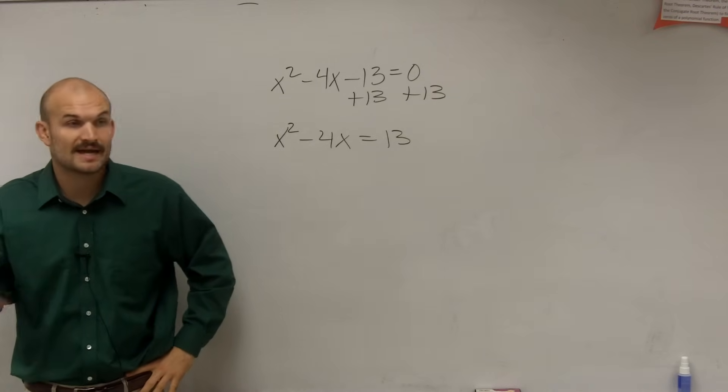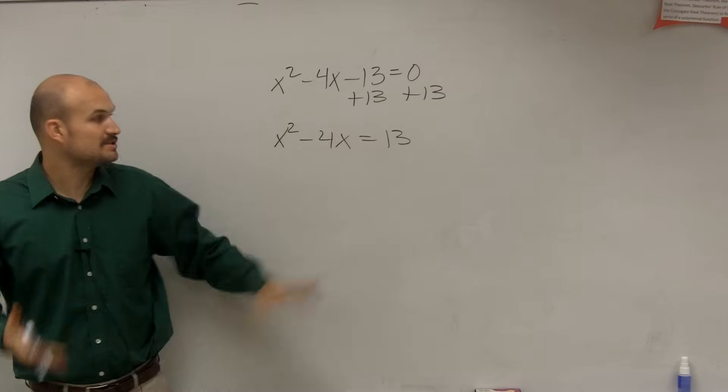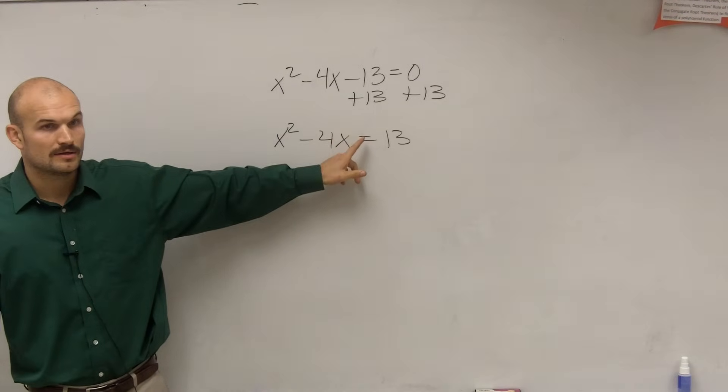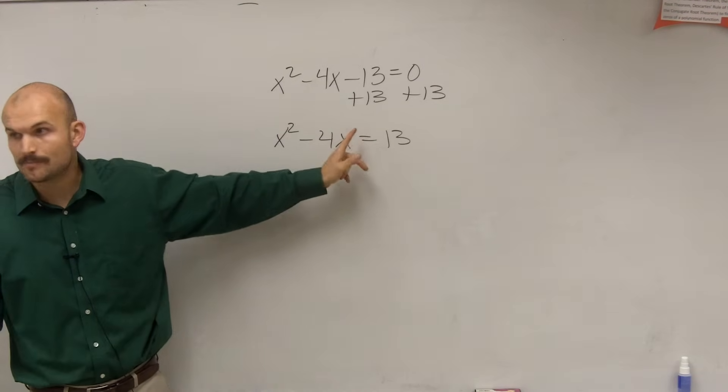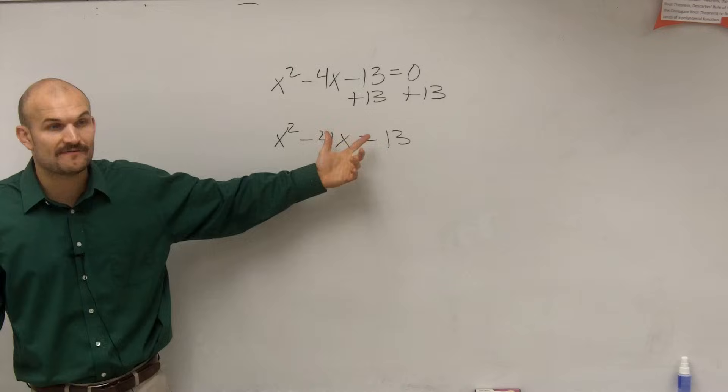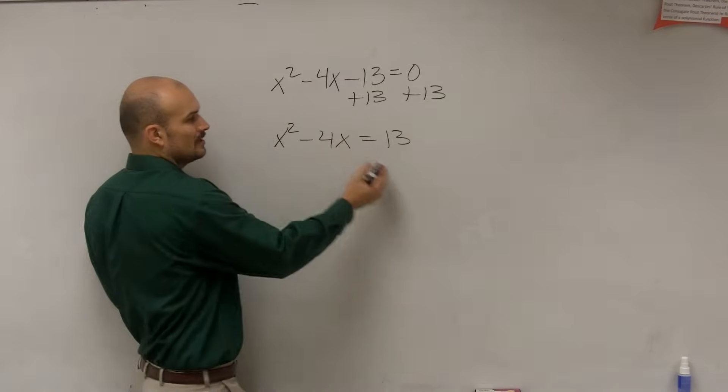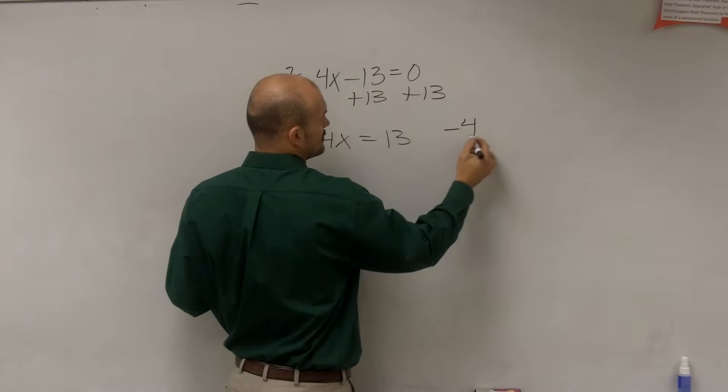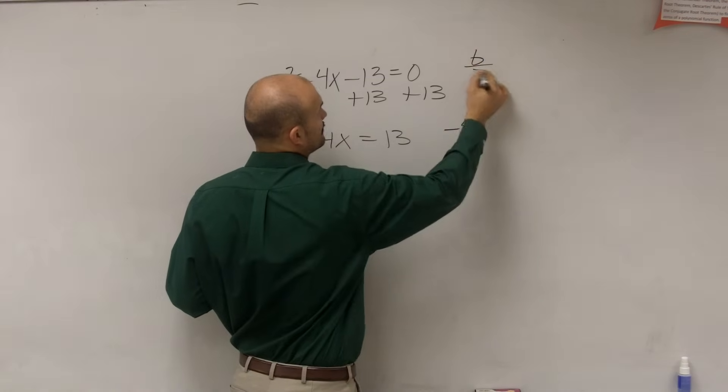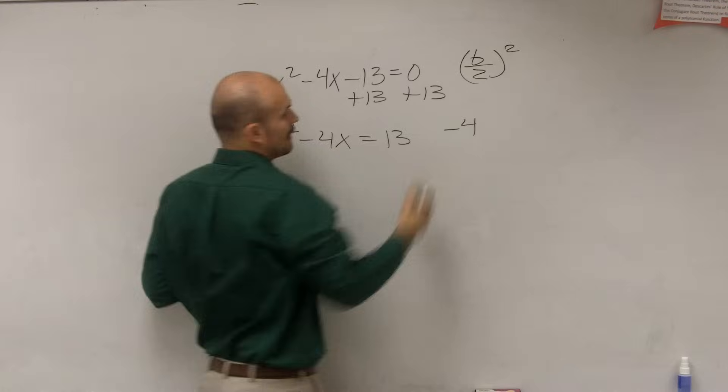So now what we're going to do is exactly like what we just did. We are going to find the value, c, that will create a perfect square trinomial. So we've got to find the value. We've got to find a new value. So to find our new value, what we're going to do is exactly what we did before. Take our b divided by 2 and square it.